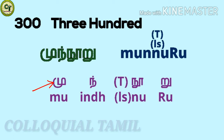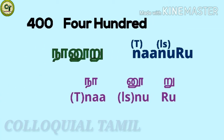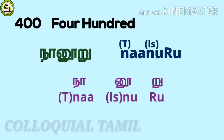For 300: mun noo ru. You just add these two letters to noo ru. Mu is a short sound letter, ind is a consonant. When joining with noo ru, the dh sound of the consonant becomes silent and it becomes mun noo ru.